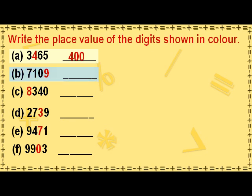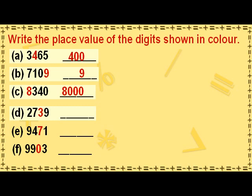The place value of 4 in the hundreds place is 400. The place value of 9 in the ones place is 9. The place value of 8 in the thousands place is 8000. The place value of 3 in the tens place is 30. The place value of 7 in the tens place is 70. The place value of 0 in the tens place is 0.